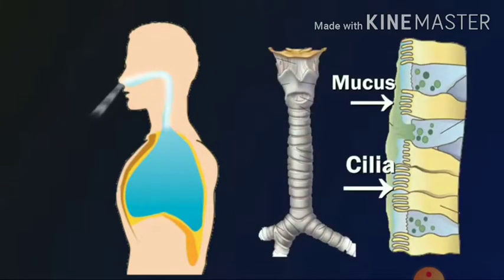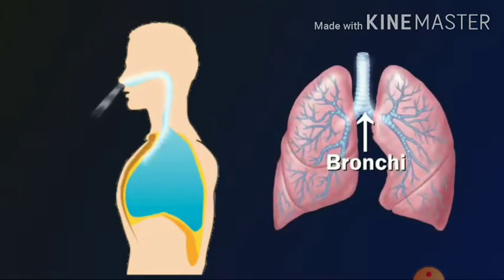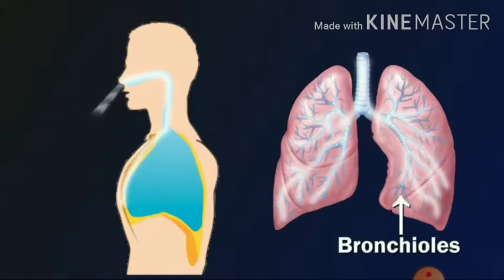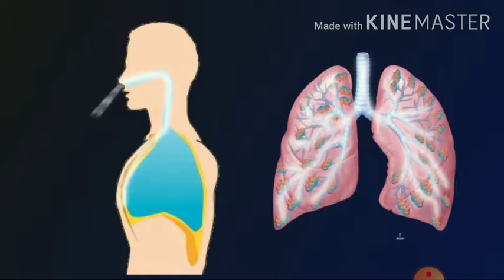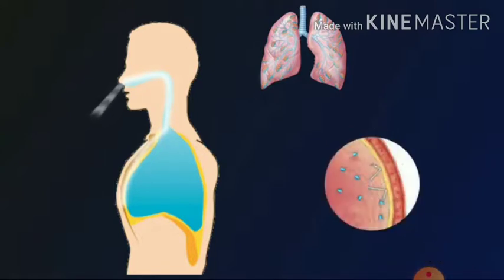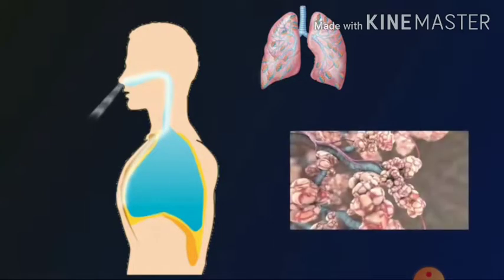The mucus present in our nose filters the air. Then air goes into the bronchioles, from the bronchus to the bronchioles, then to the alveoli, where it is filtered further. Then it reaches our blood vessels. The oxygenated blood reaches the blood vessels, and there gas exchange happens — the blood takes in oxygen and releases carbon dioxide.